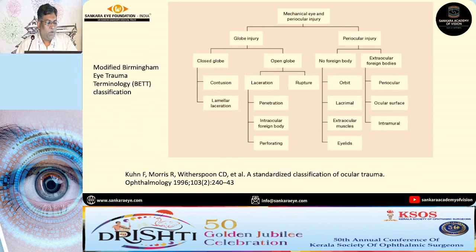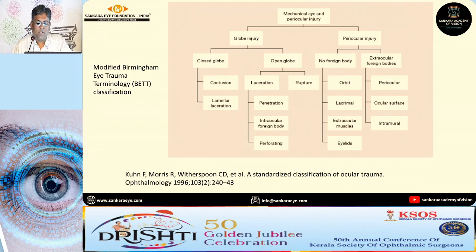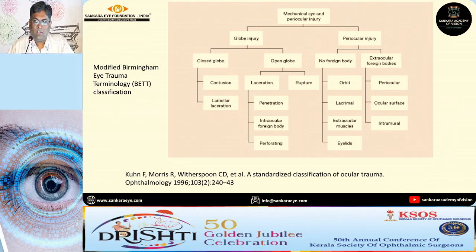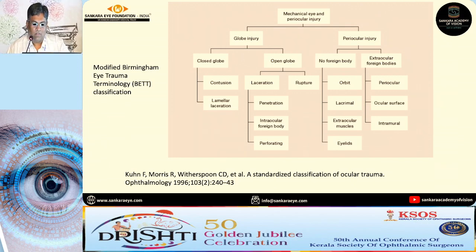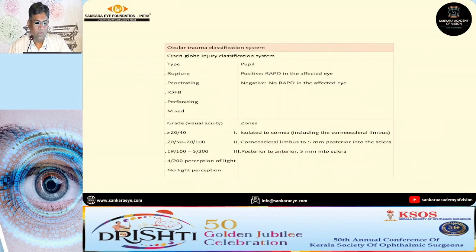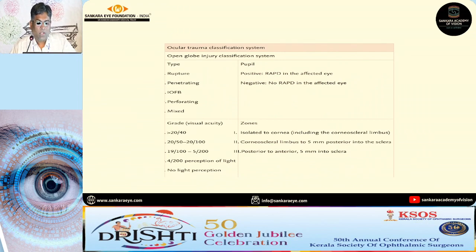This is the modified Birmingham Eye Trauma classification which classifies injuries as globe injury and periocular injuries. Globe injury is further divided into closed and open, and periocular injury involves adjacent structures. You can also classify it by type of injury, whether the pupil is involved, the grade based on visual acuity, and the zones of involvement.